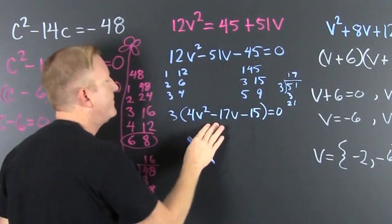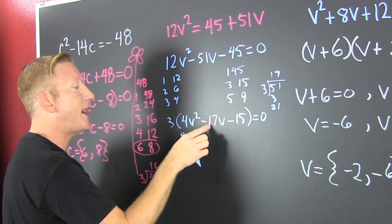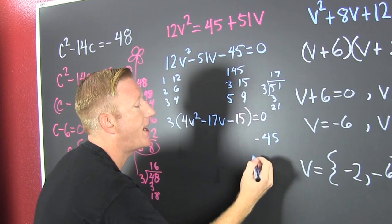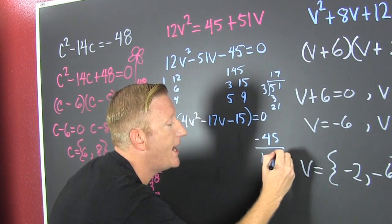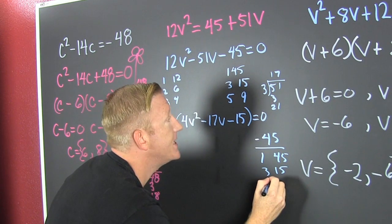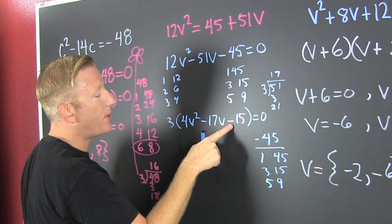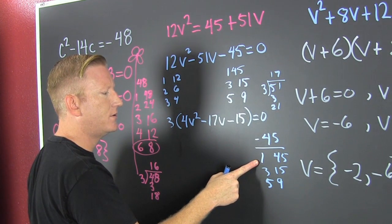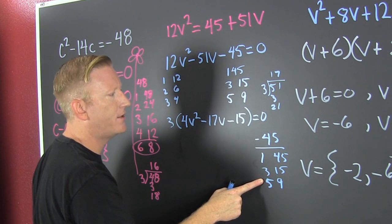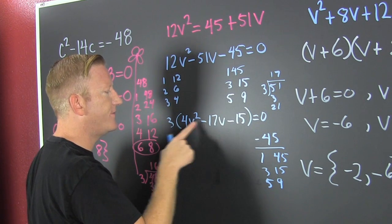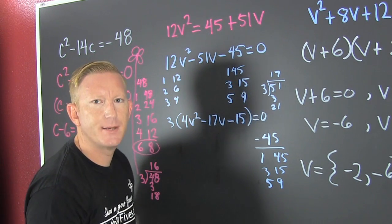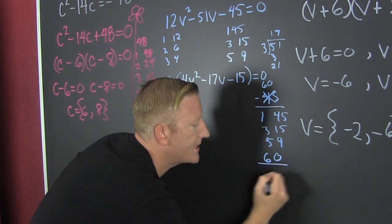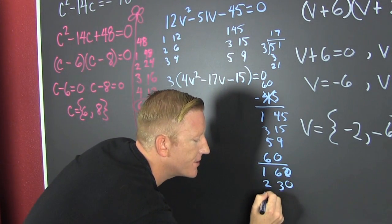So now we're looking for 4 and 15 that subtract to be 17. Let's use the AC method. So then 4 times 15 is a negative 45, so we break it down. That's 1 and 45, that's 3 and 15, that's 5 and 9. We're looking for the factors that subtract to be 17. Oh, I don't see any. Wait, 4 times 15 isn't 45. 60! So that's 1 and 60, 2 and 30, that's 3 and 20. Found them, found them, that elusive factor.